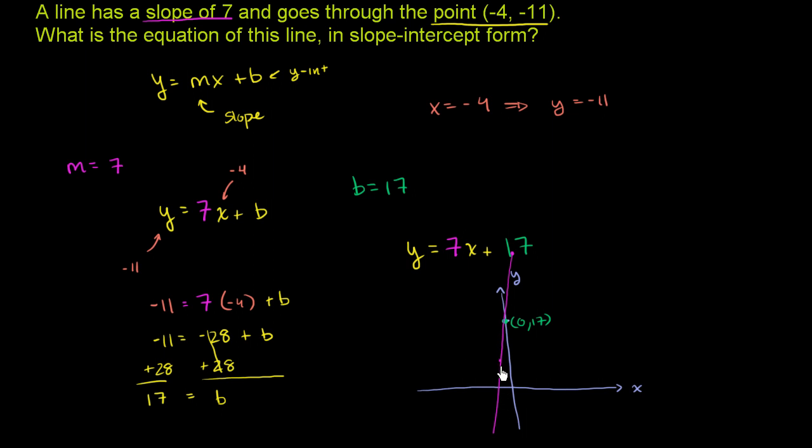It's going to be a pretty steep, upward sloping line. It has a very high slope, slope of 7. If you move 1 in the x-direction, you have to move up 7. And its y-intercept is at y equals 17. When x is 0, y is 17.